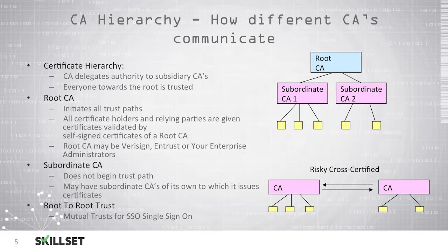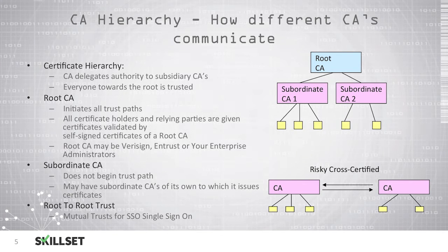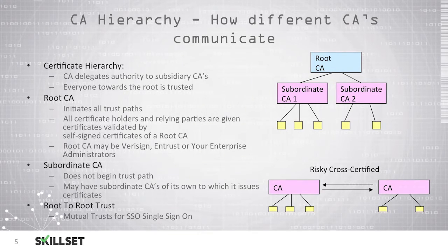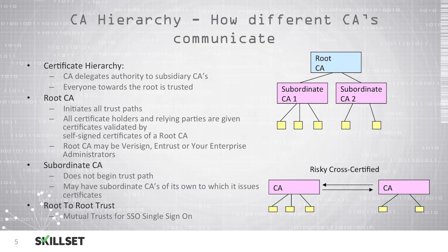Subordinate certificate authorities do not begin the trust path — the trust path is always initiated by the root certificate authority. Subordinate certificate authorities can also have additional subordinate certificate authorities of their own to which they issue certificates. You can also have root-to-root trust, where two root certificate authorities trust each other, usually done for single sign-on (SSO).